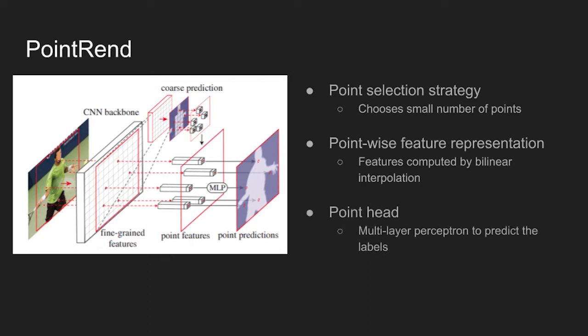Lastly, at PointHead, a small neural network is trained to predict a label from this point-wise feature representation independently for each point.